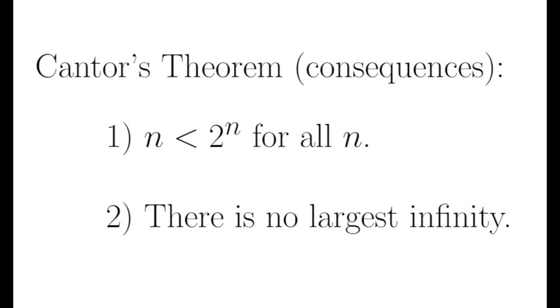As a corollary to Cantor's theorem, 2 to the n is strictly larger than n, for all finite and transfinite cardinal numbers n, and there is no largest infinity.